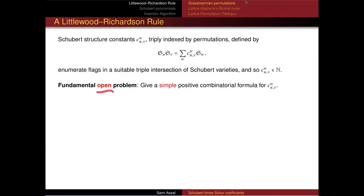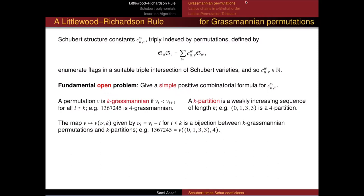I'm going to do a special case today. I'm looking at this and letting the indexing permutation be K-Grassmannian. A Grassmannian permutation has a unique descent. For example: 1, 3, 6, 7 — those numbers are increasing — and then at position four, where the seven is, I go down to two, and then the numbers increase again: 2, 4, 5, 8, 9, 10, 11, 12... This is K-Grassmannian because there's one descent.